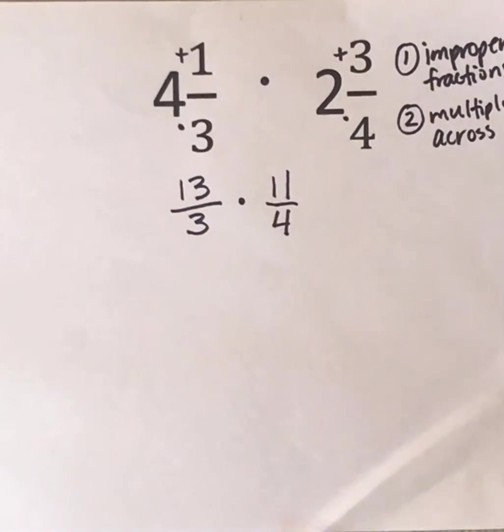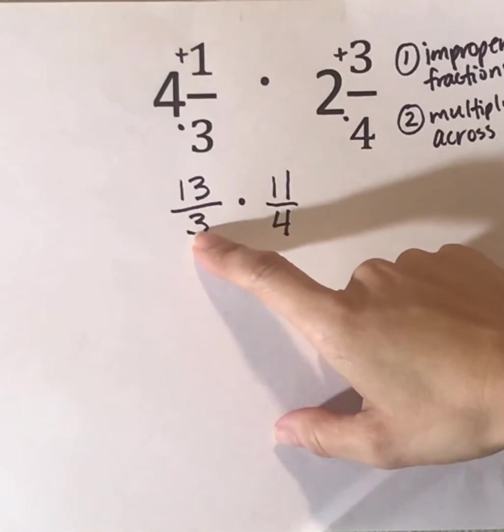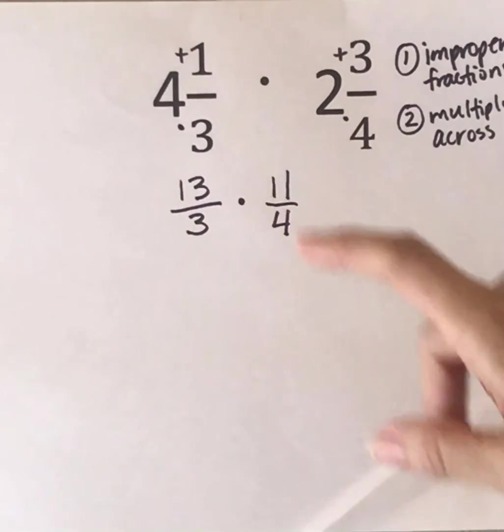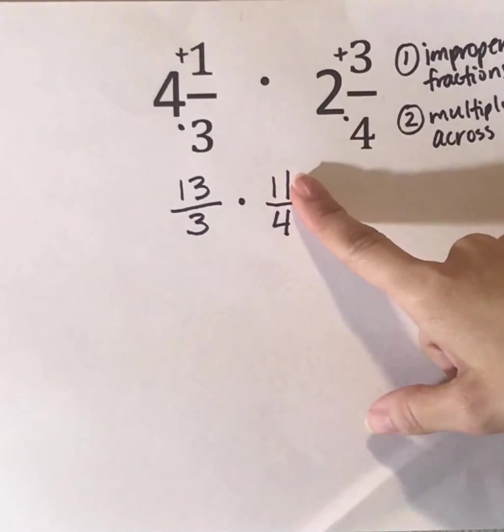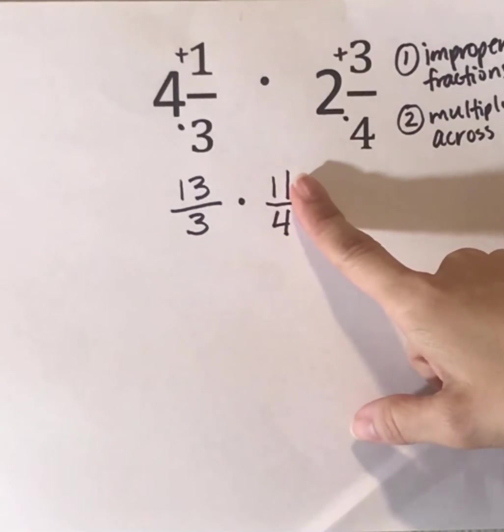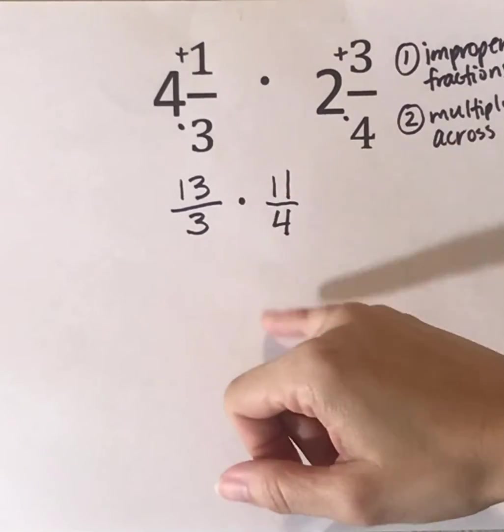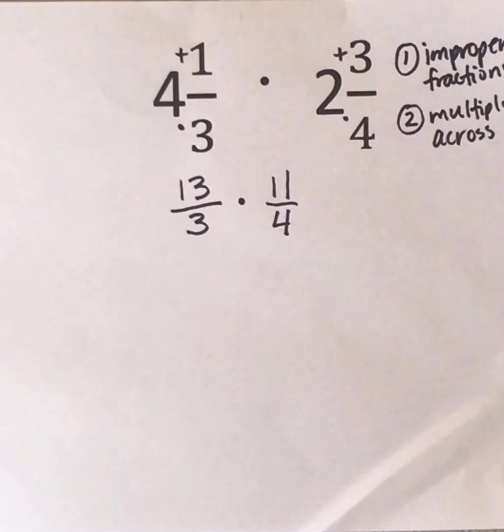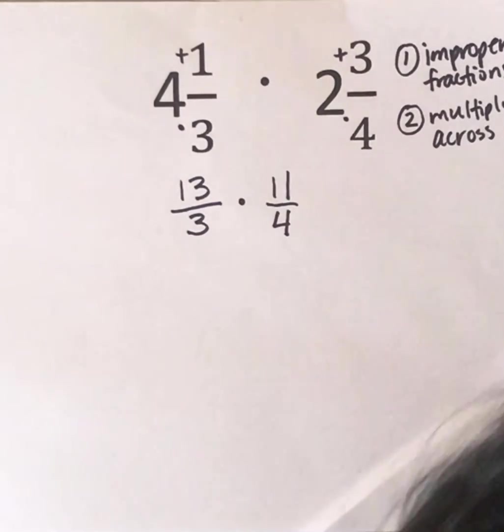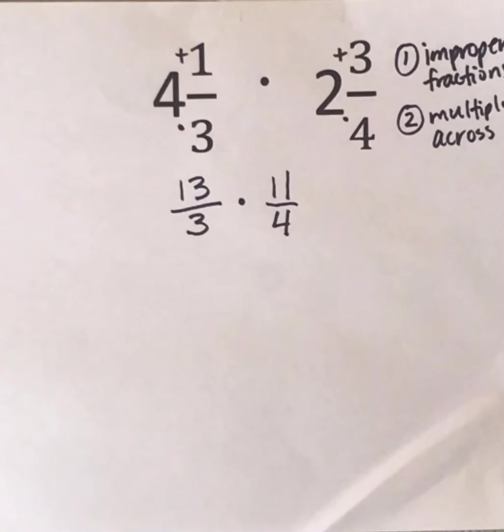But in this particular problem, if you look, I can't cross simplify because 3 and 11 don't have a common factor. And then the next thing I need to look at is 4 and 13. And 4 and 13 also don't have a common factor.